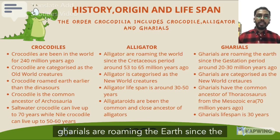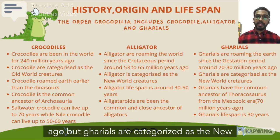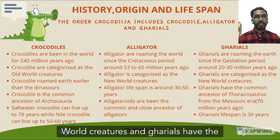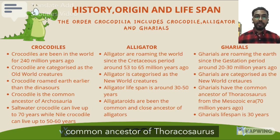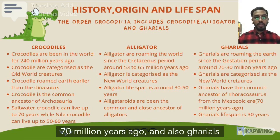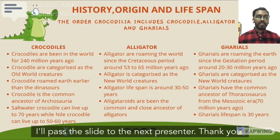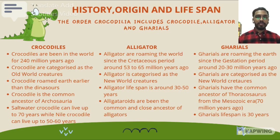Next are the Gharials. Gharials have been roaming the earth since the Cretaceous Period, around 20 to 30 million years ago, and are categorized as New World Creatures. Gharials have the common ancestor of Thoracosaurus from the Mesozoic Era, which roamed the earth around 70 million years ago. Gharials' lifespan is around 30 years. I'll pass the slide to the next presenter. Thank you.